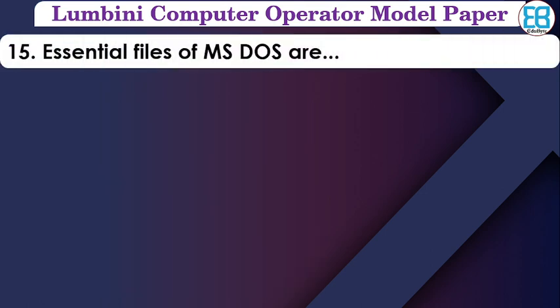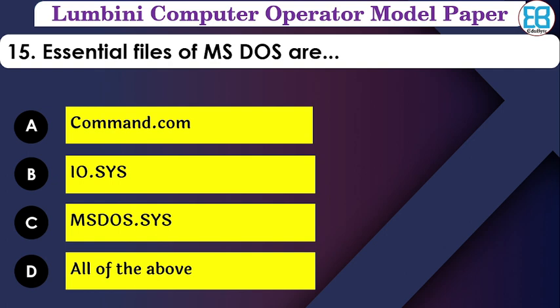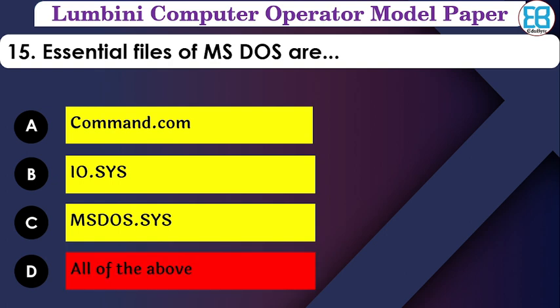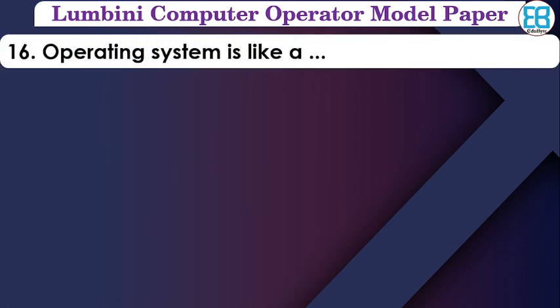How many files does the operating system have? The files include command.com, IO.sys, and MS-DOS.sys. The correct option is all of the above — all are part of the operating system.